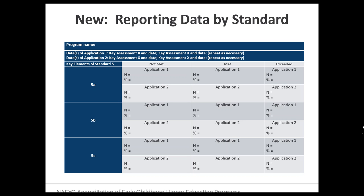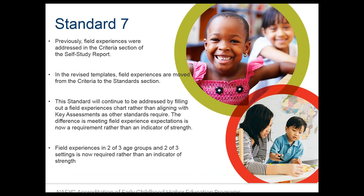A question about settings: Is family child care considered a separate setting from a child care setting? Family and child care settings are grouped together as one category. The profession has determined that the three setting categories are: family and child care settings as one category, Head Start as its own category, and early school grades as the third category.